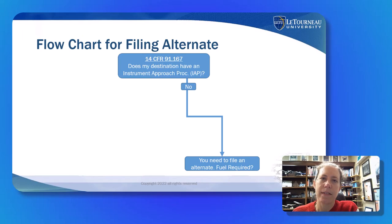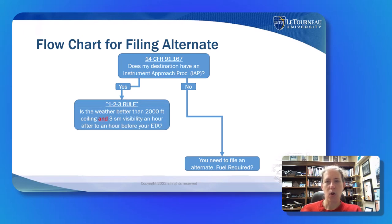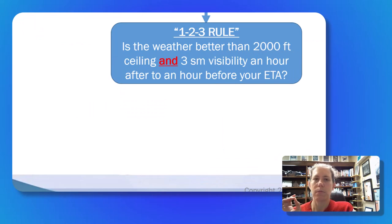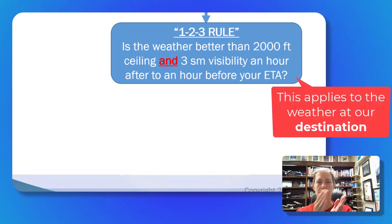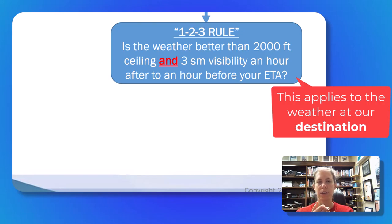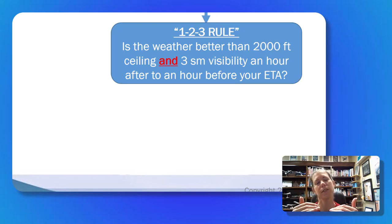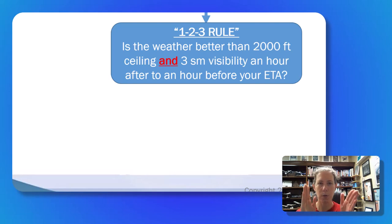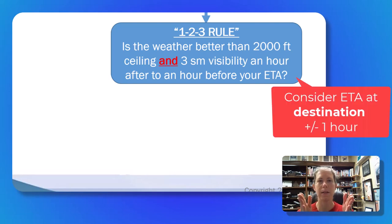Let's say my destination does have an instrument approach procedure. We're going to zoom in and unpack the 1-2-3 rule. We look at the weather at my destination from one hour before to one hour after my estimated time of arrival.